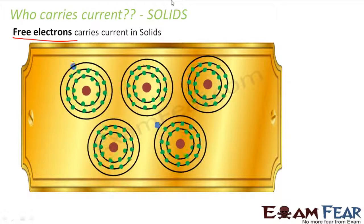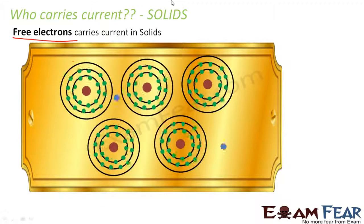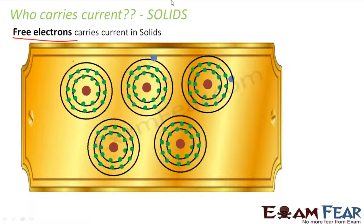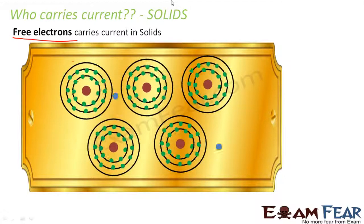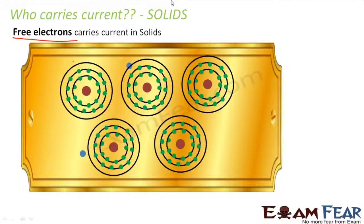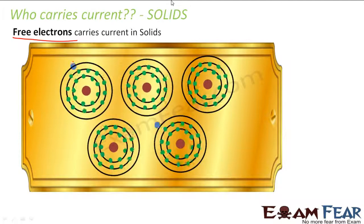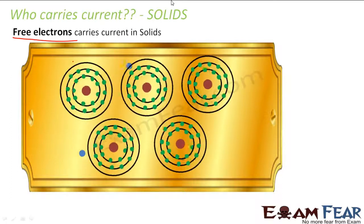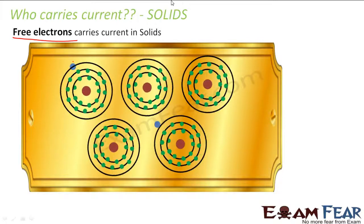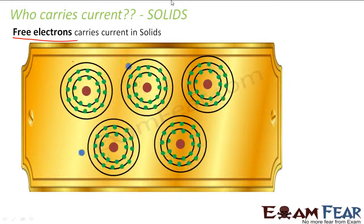Current is nothing but flow of charges, and electrons are also charges. So flow of electrons constitutes current in solids. In solids, free electrons — that is, the valence electrons, the most loosely bound electrons — carry current.